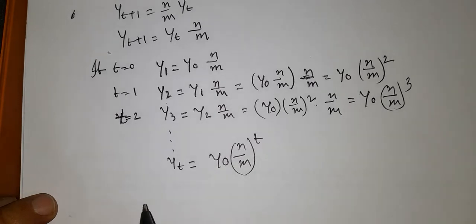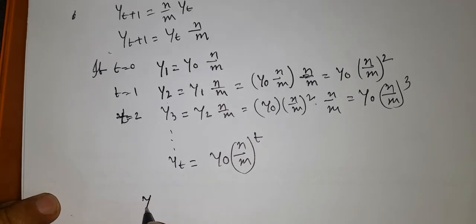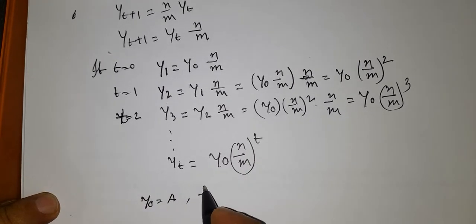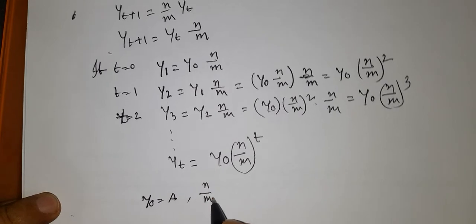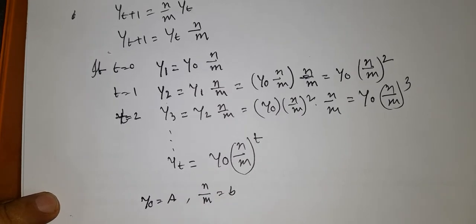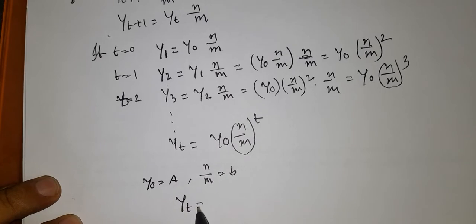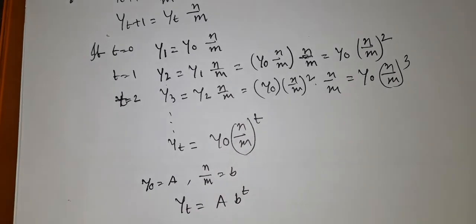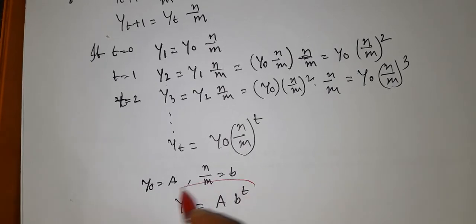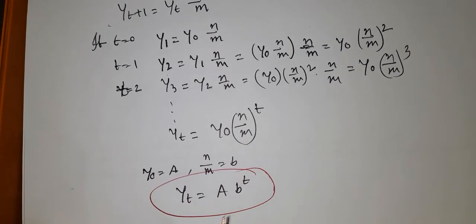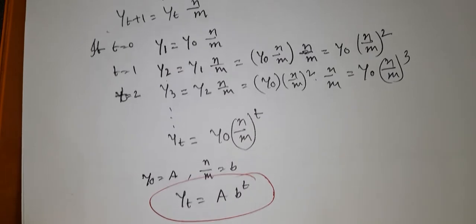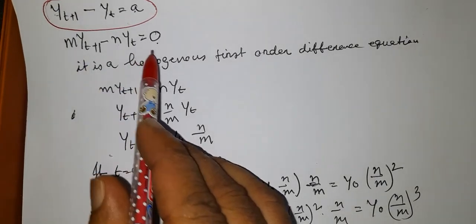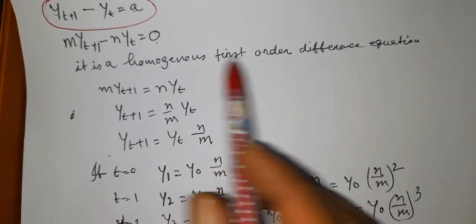If the initial value y_0 is a, and the ratio n/m is b, then y_t = a · b^t. This is the solution of the homogeneous first order difference equation.